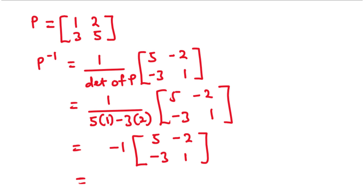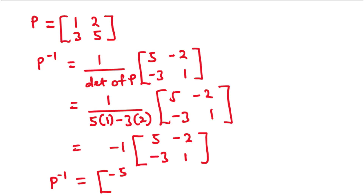So this becomes negative 1 times the matrix 5, negative 2, negative 3, 1. Therefore, the inverse of P is equal to negative 5, 2, 3, negative 1 — multiplying negative 1 across the matrix. This is the inverse of matrix P.